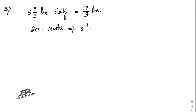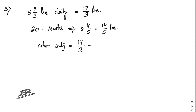For science and maths, 2 and 4/5 equals 14/5 hours. For other subjects: total time 17/3 minus 14/5. The LCM of 3 and 5 is 15. So 17 times 5 equals 85, and 14 times 3 equals 42.